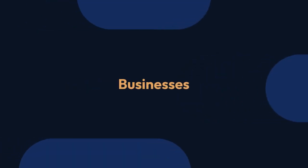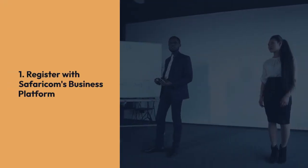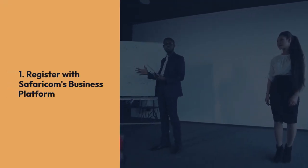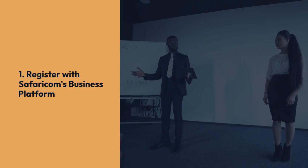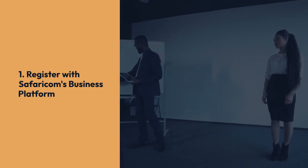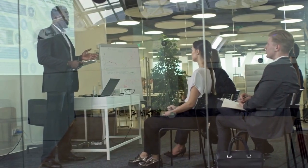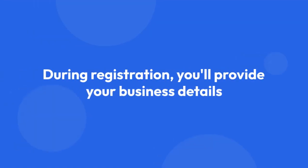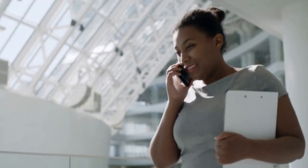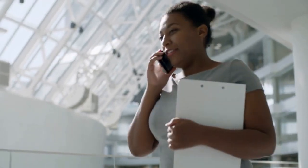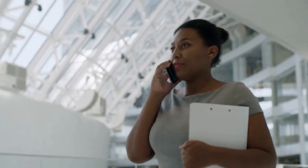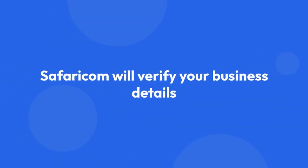Let's start with businesses. 1. To enable M-Pesa Express Billing for your business, you'll need to register with Safaricom's business platform, usually through their website or by contacting their business support. 2. During registration, you'll provide your business details, including your business name, registration number, and contact information. 3. Safaricom will verify your business details, which might involve providing additional documentation.